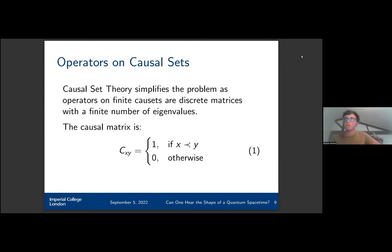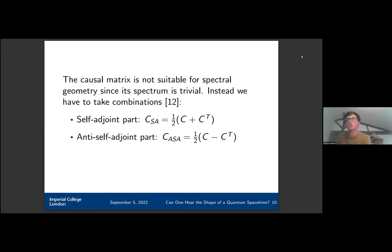For example, an operator we might use is the causal matrix, which gives us the causal structure of the causal set. It completely describes the causal set. Unfortunately, the causal matrix is not suitable because its spectrum is trivial. So instead we have to take combinations of the causal matrix. Because it's a normal matrix, we can simply take the self-adjoint and anti-self-adjoint parts, and this will give us a non-trivial spectrum.